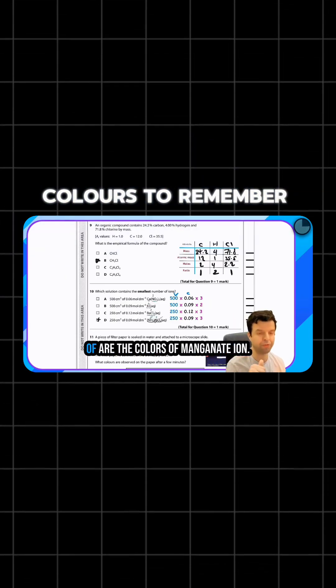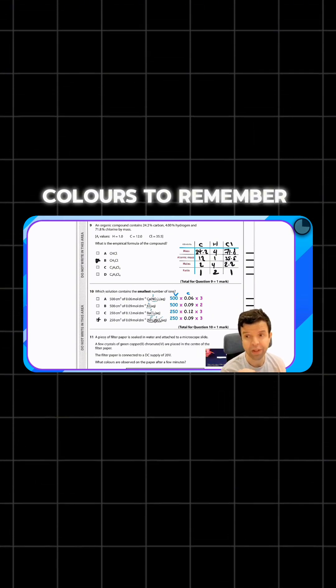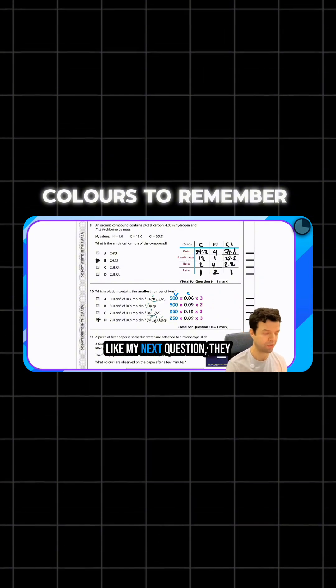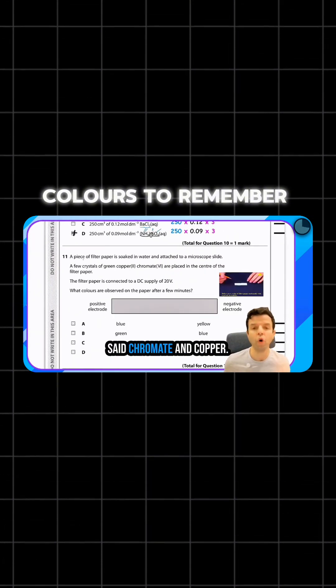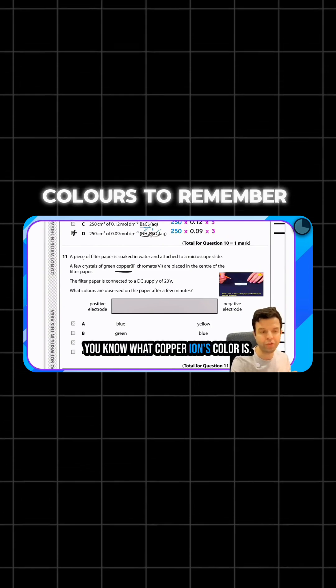Some colors you have to be aware of are the colors of manganate ion. Do you know what color is manganate? Manganate is purple. Chromate is yellow like my next question. They said chromate and copper.